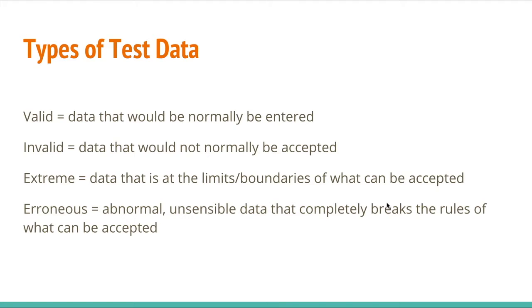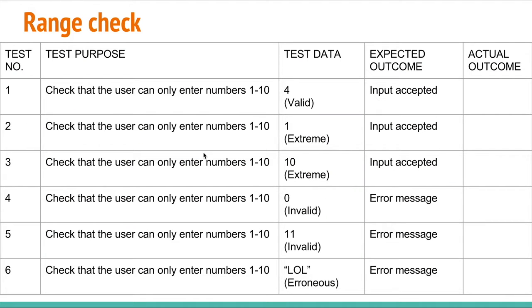And a good example to use so you can understand this is for a range check. So, here we have a test plan. And this test plan is to check that the user can only enter numbers between 1 and 10. So, the range is 1 to 10. Here we have valid data. It's within the acceptable range. It's accepted. Here we have extreme data within the boundaries, the limits of the range. So, 1 and 10, which is also accepted.